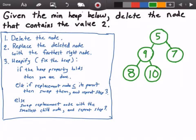Now we go back and repeat step 3: does the current node we're looking at — which is 9 — satisfy the heap property? Is it less than or equal to its children? 9 is indeed less than 10, but 9 is not less than 8, so we need to swap the 8 and the 9. After that swap, we go back to step 3 and check again. Now 9 doesn't have any children, so we know it's in the right place. Our heap is complete, the heap property holds true, and we are done with our algorithm.